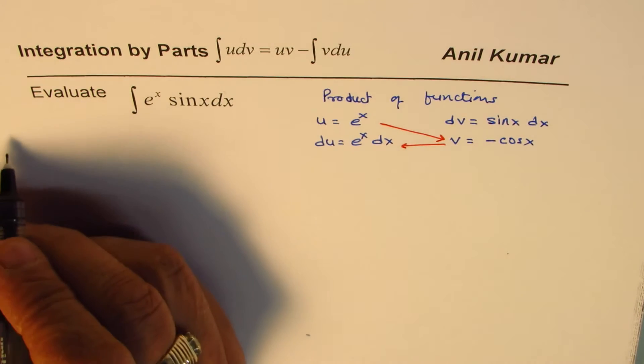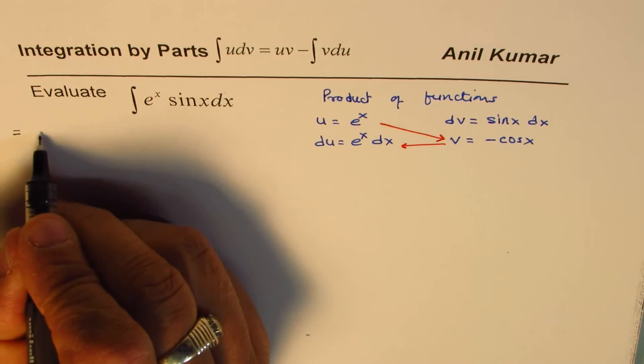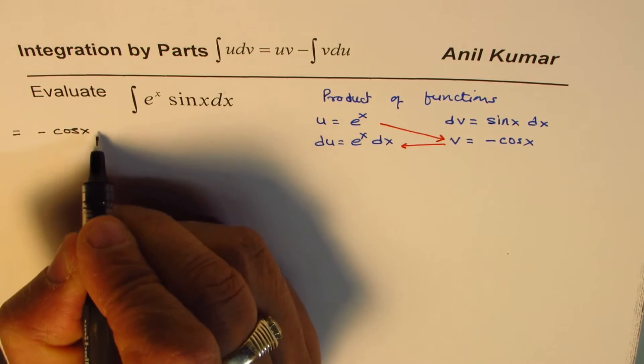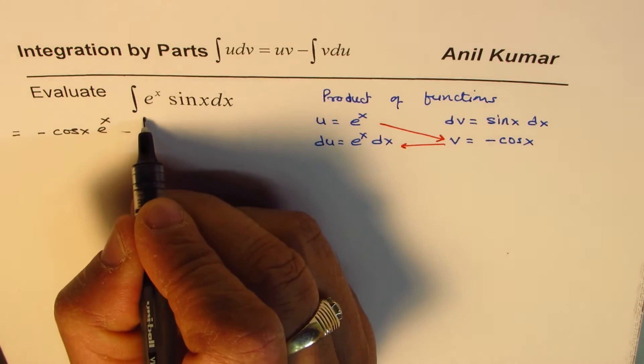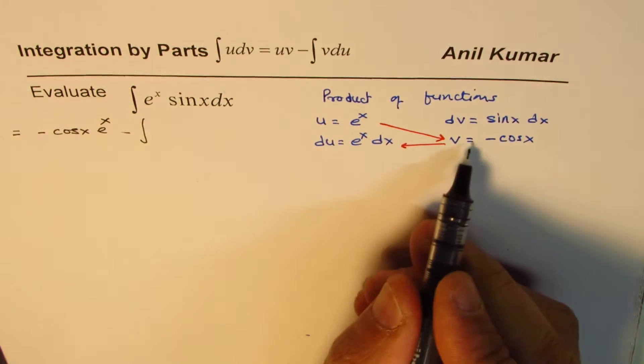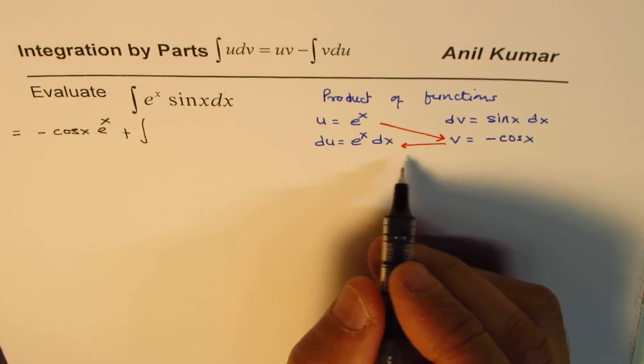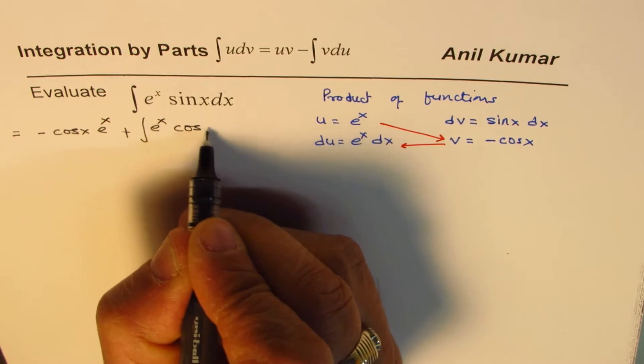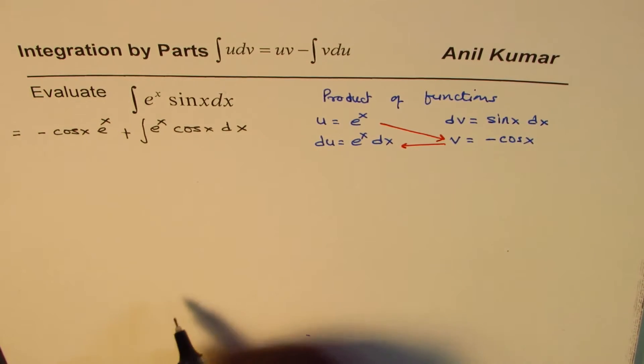So let's do that. We could write this as equal to, when you multiply these, you get minus cos x e to the power of x, and minus integral of product of these two. Since this is negative, let me make this positive, and you get e to the power of x cos x dx.